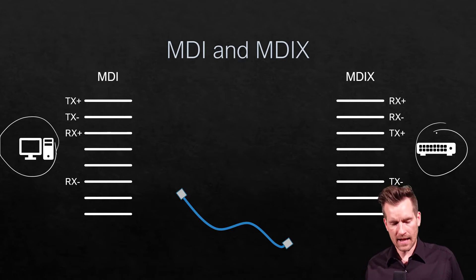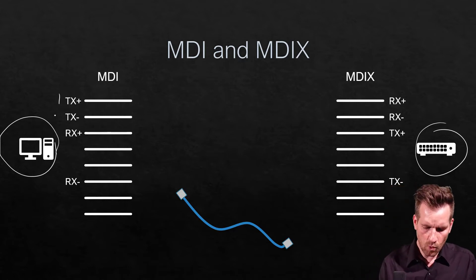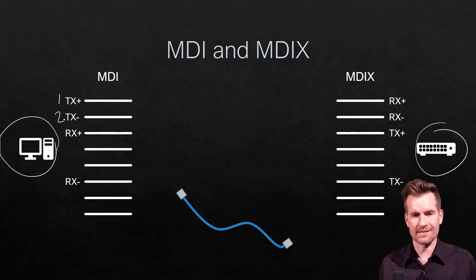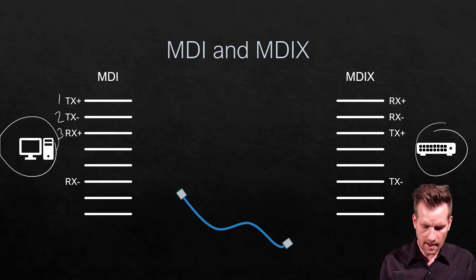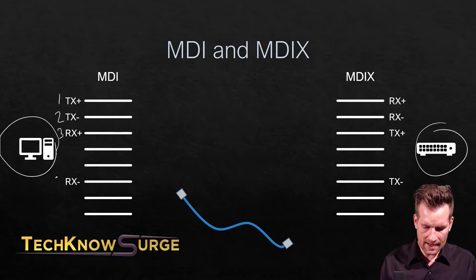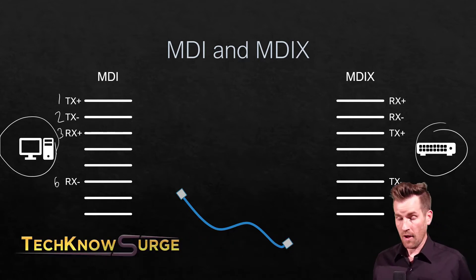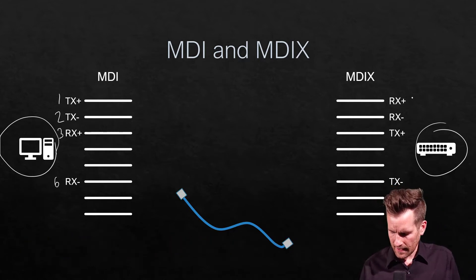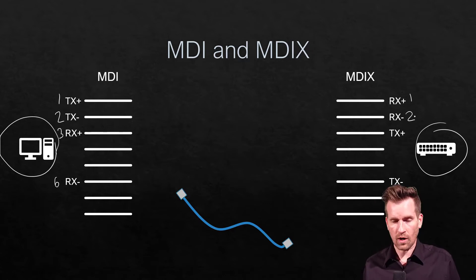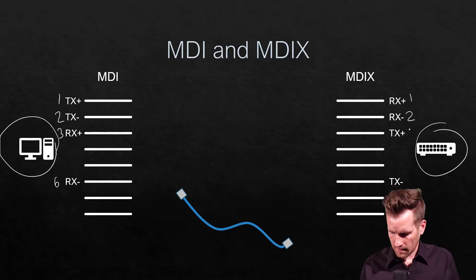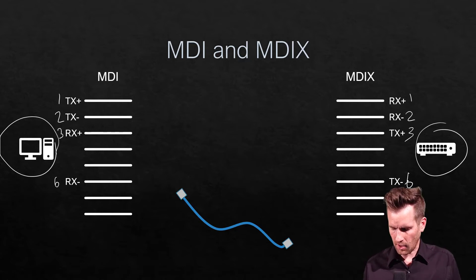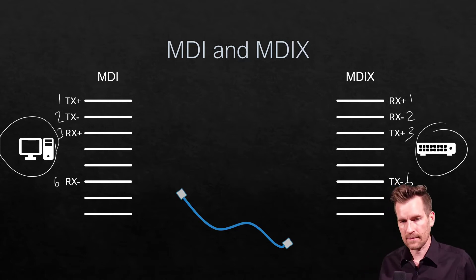The MDI interfaces have pins 1 and 2 as the transmit, and pins 3 and 6 as the receive. The MDIX interfaces are the opposite — pins 1 and 2 are the receive, and pins 3 and 6 are the transmit.